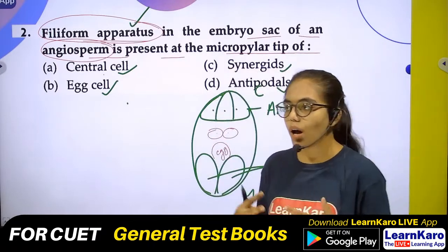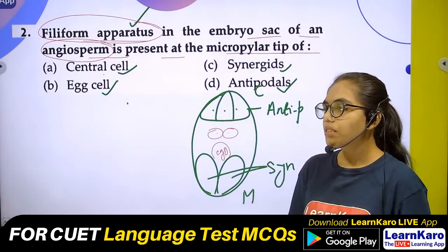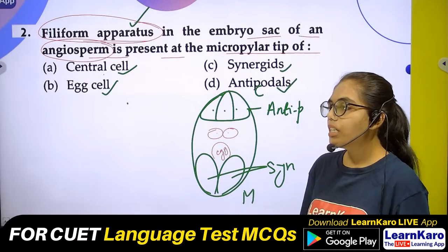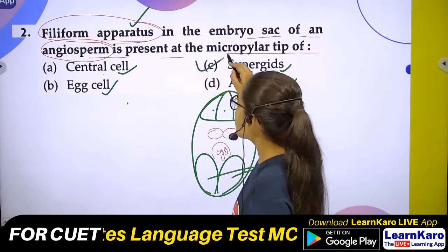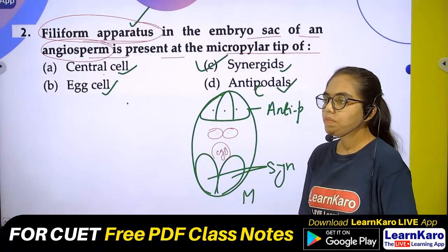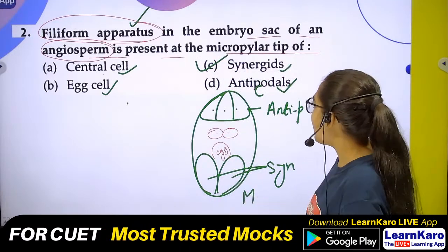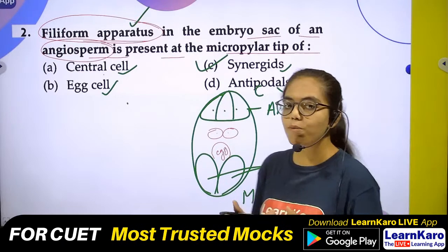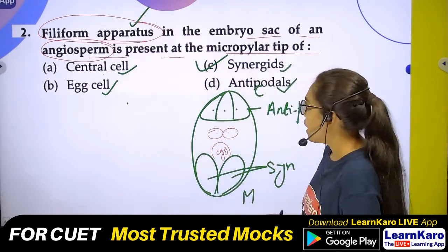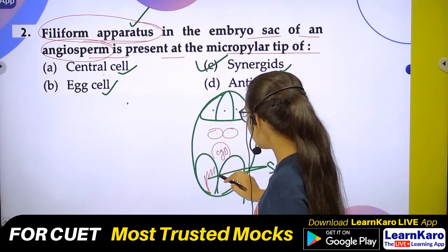So the correct answer is Synergid — Option C. The filiform apparatus is present in the Synergid cells. It helps to guide the pollen tube.